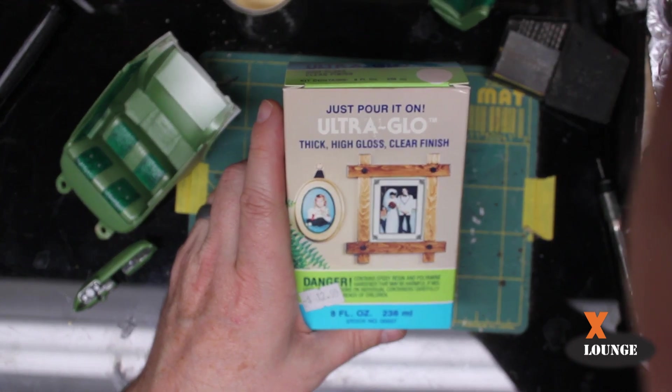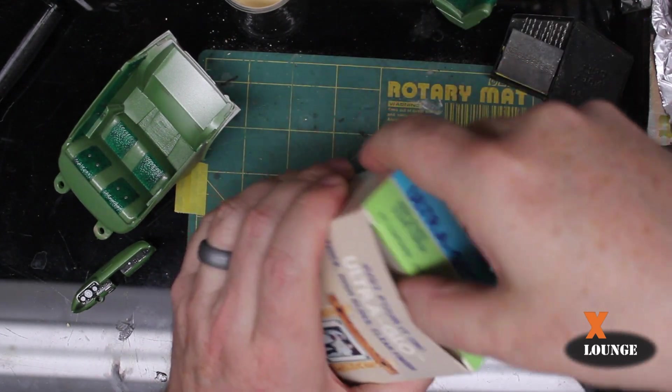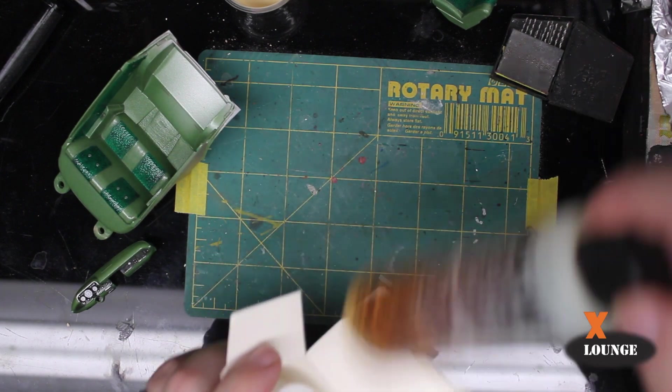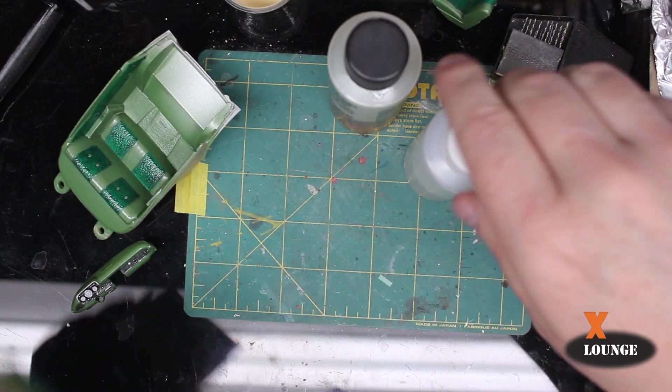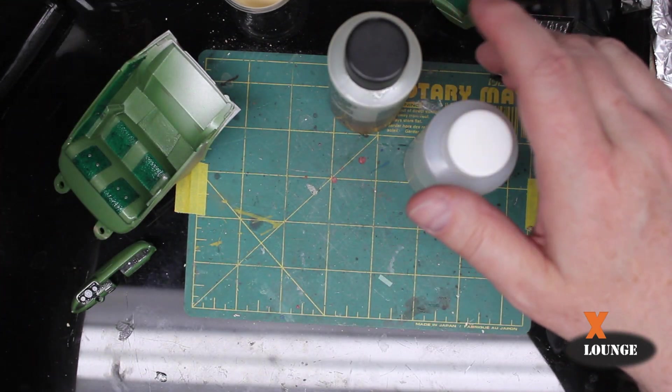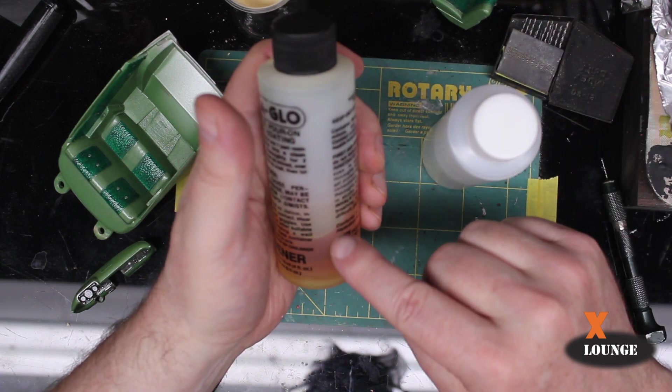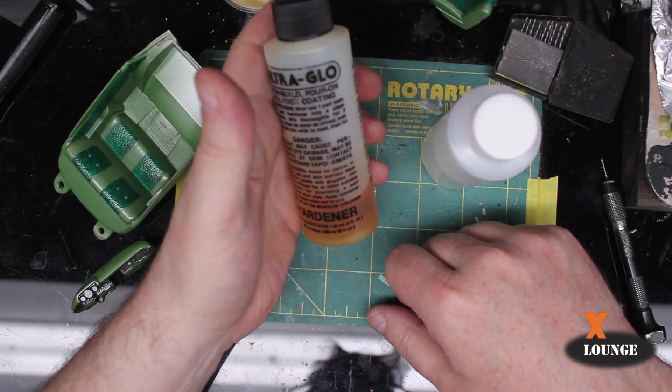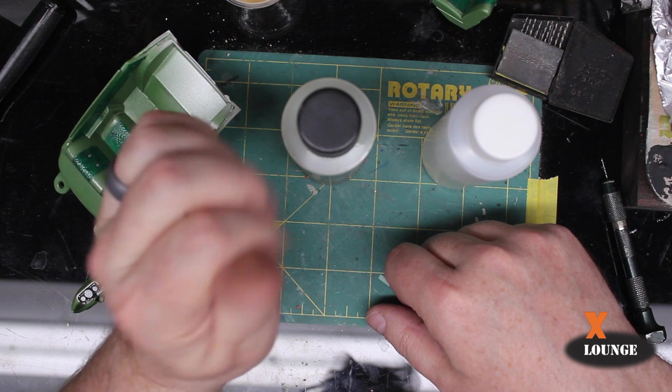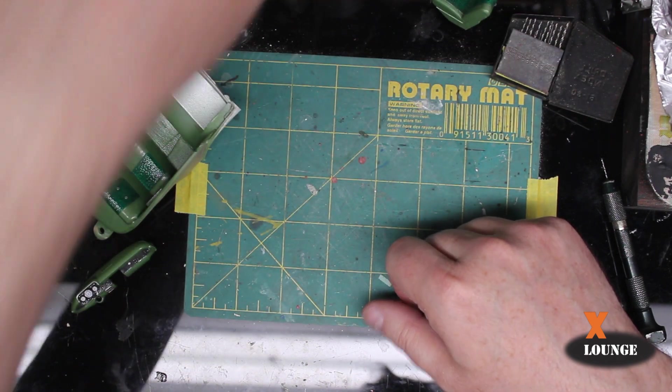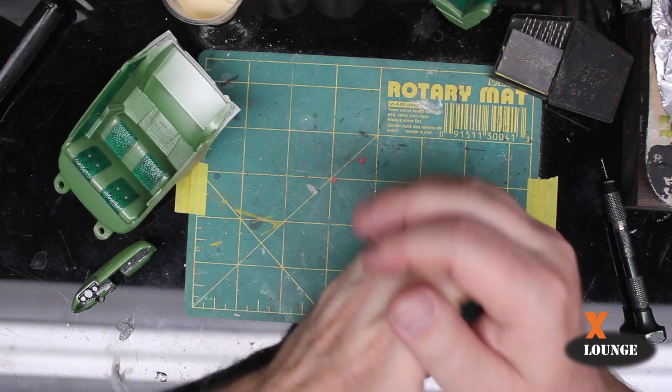This brand has probably gone the way of the dodo bird, but all it is is a two-part resin, clear resin. As you can see, this part has gone fairly bad, but it will still look the part for what we want, because we are only going to be using a very little bit of it.